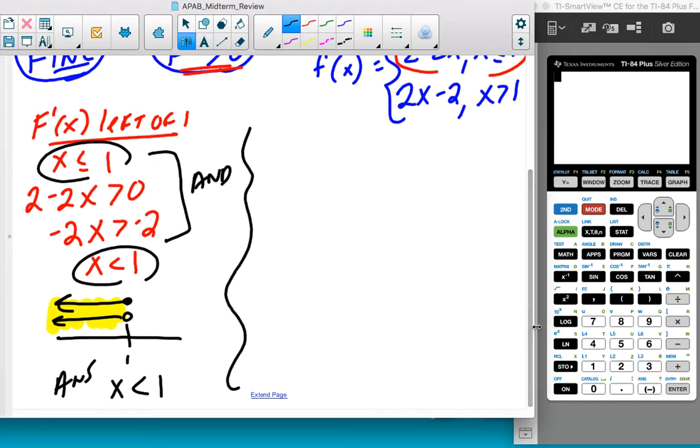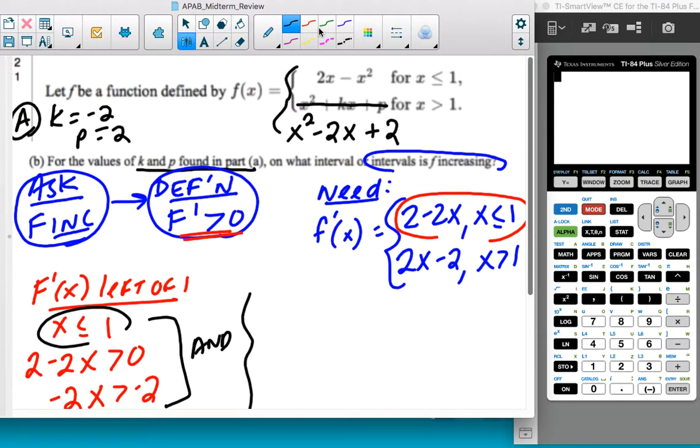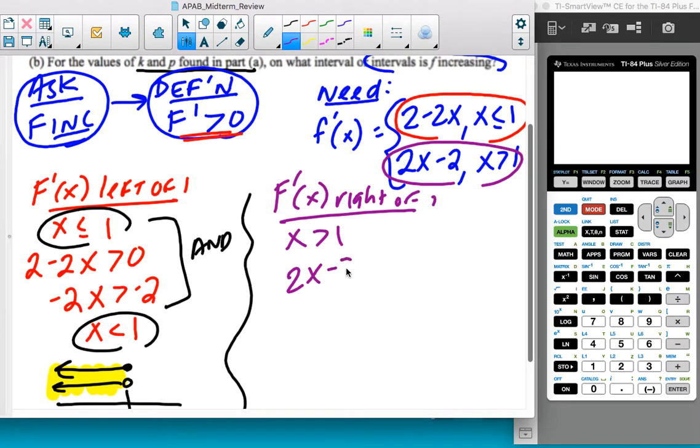If I then do the other half, if I say, okay, well, what's happening on the other side? I need this side. Well, for F prime of x right of 1, I know that x is greater than 1. I want 2x minus 2 to be greater than 0. So that's 2x is greater than 2, which is x is greater than 1.